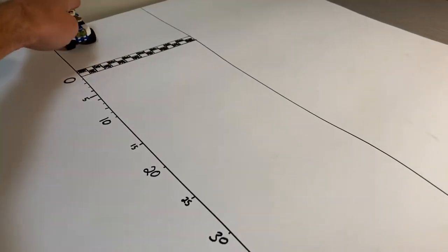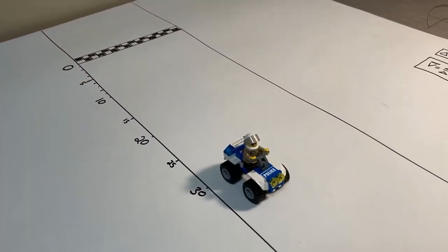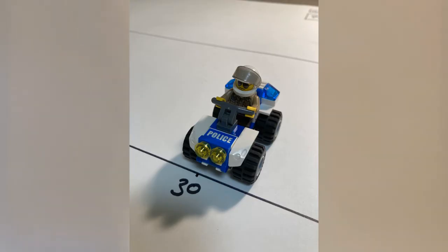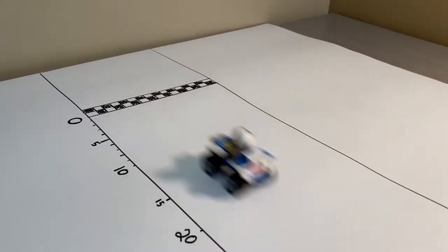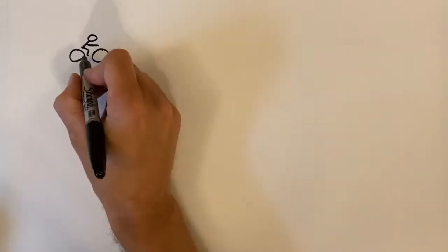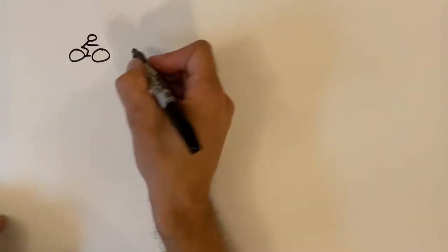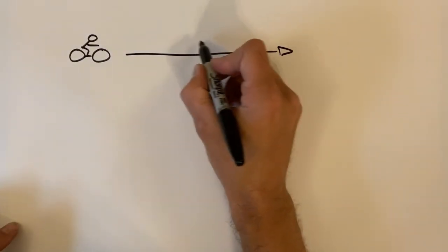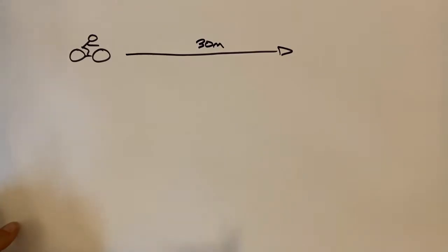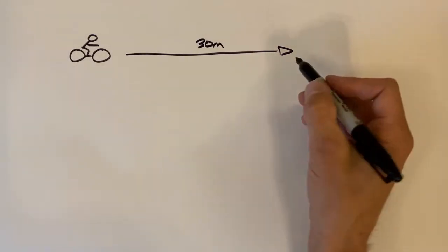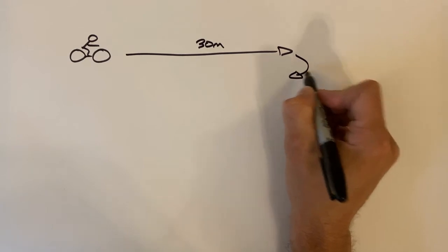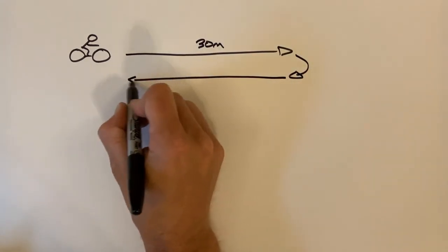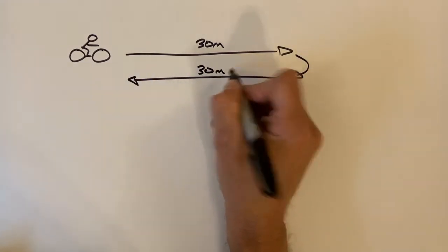Let's take a look at an ATV driving 30 meters in one direction, turning around and driving 30 meters back to where it began. So here's our person on their ATV. They're going to go 30 meters this way, and they're going to turn around and drive 30 meters back.